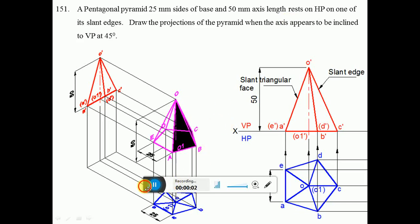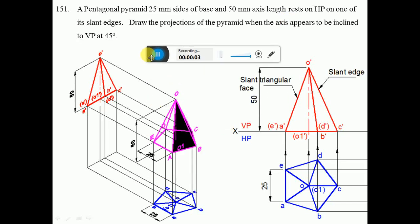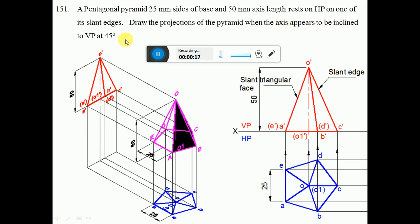A pentagonal pyramid of 25mm sides of base and 50mm axis length rests on HP on one of its slant edges. Draw the projections of the pyramid when the axis appears to be inclined to VP at 45 degrees.